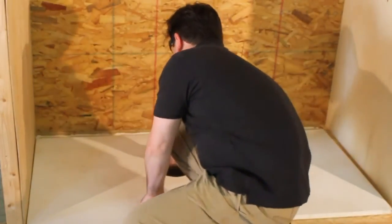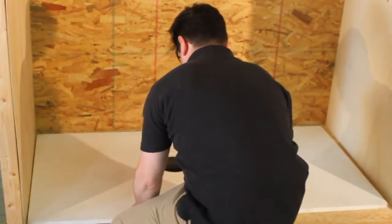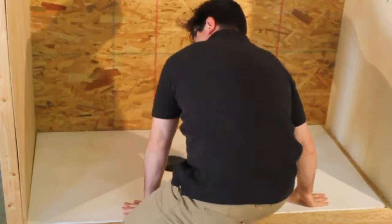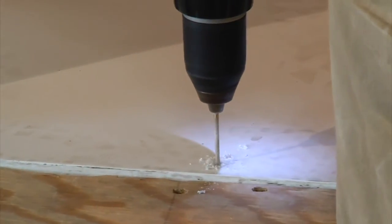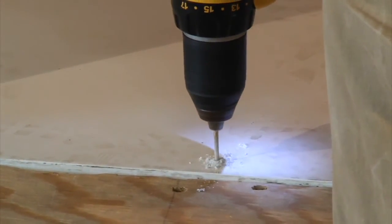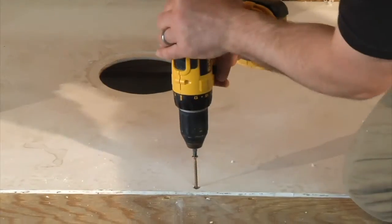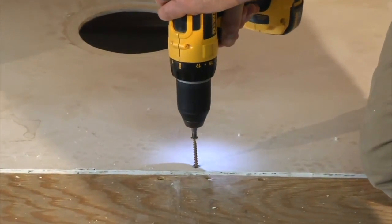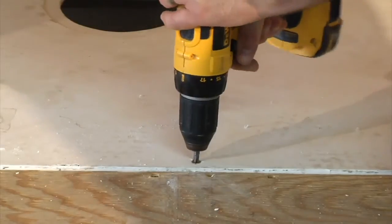Make sure you set the pan in so that the drain hole stacks over the blocking prepared for it. The pan has countersunk indentations evenly spaced around the perimeter. Pre-drill and fasten the pan in every one of these holes. Do not over-tighten any of the screws, as this can force the pan out of level.